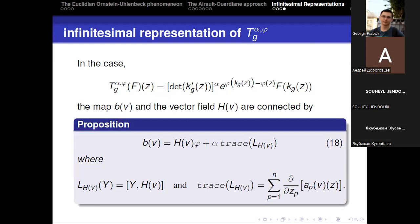In this slide, we give some relation between the scalar factor in the infinitesimal representation with respect to the holomorphic vector field: B_V = H_V(φ) + α · trace(L_{H_V}), where L_{H_V} is the derivation in the direction of H_V. The bracket here is the commutator of differential operators: [A, B] = A ∘ B − B ∘ A.